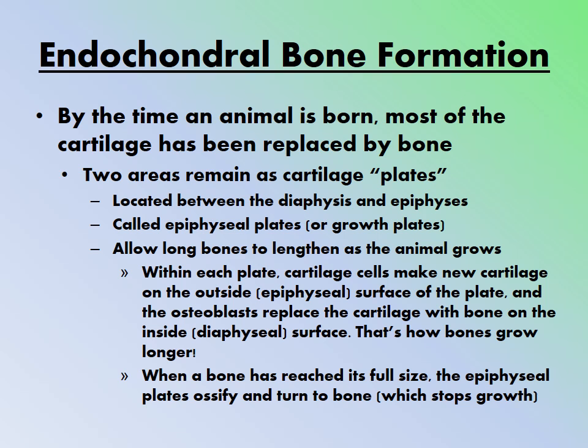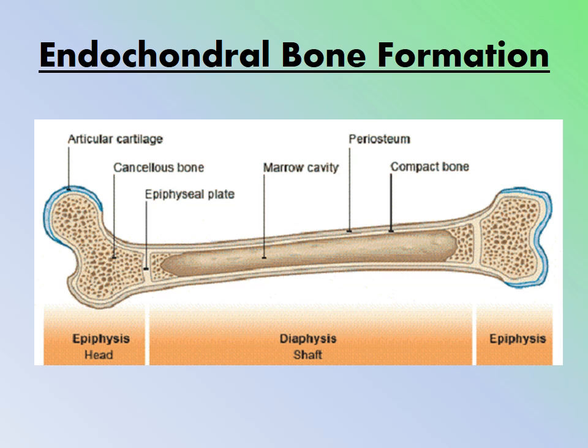Within each growth plate, cartilage cells make new cartilage on the epiphyseal surface, while osteoblasts replace the cartilage with bone on the diaphyseal surface. This is how bones grow longer. When a bone reaches its full size, the epiphyseal plate completely ossifies and turns to bone. In adults, these growth plates no longer exist because they have fully ossified, which is why bone growth stops.